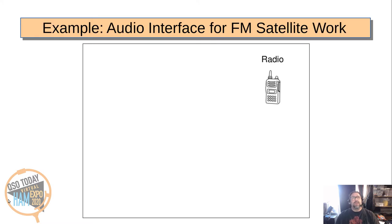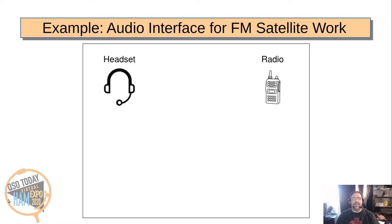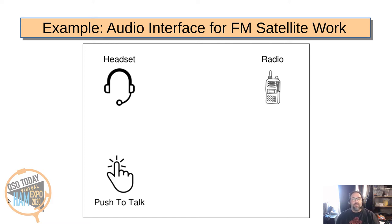Let me give you an example. When I got into FM satellite work, I was thinking about the hardware I wanted to use. You've got an antenna in one hand and the radio in the other, and you've got to twiddle the knob to change frequency as the Doppler shift changes going overhead. So you can't have a speaker mic in your hand — your third hand — so you get a headset: headphones and a microphone on your head, which is one less thing to hold. But you still need to do push-to-talk, and I was thinking of putting a button on the handle of the antenna itself.